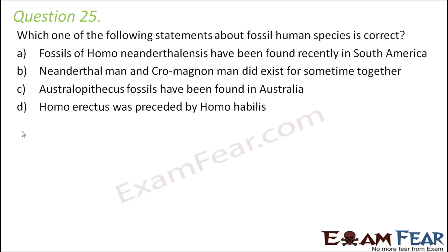Question number 25: which statement about fossil human species is correct? Fossils of Homo neanderthalensis found in South America — false, because Neanderthals were named after Neanderthal in Germany where their fossils were found. Neanderthal man and Cro-Magnon man did exist together for some time — yes, they shared the European landscape for about 10,000 years before Neanderthals disappeared, partly due to iodine deficiency causing cretinism.